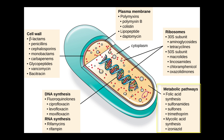Bacteria need to produce folic acid and use that folic acid to produce DNA and RNA. The final target is metabolic pathways. Here, the antibacterial drug acts as a competitive inhibitor and occupies the active site of the enzyme, so the substrate can't bind, thereby inhibiting metabolism.